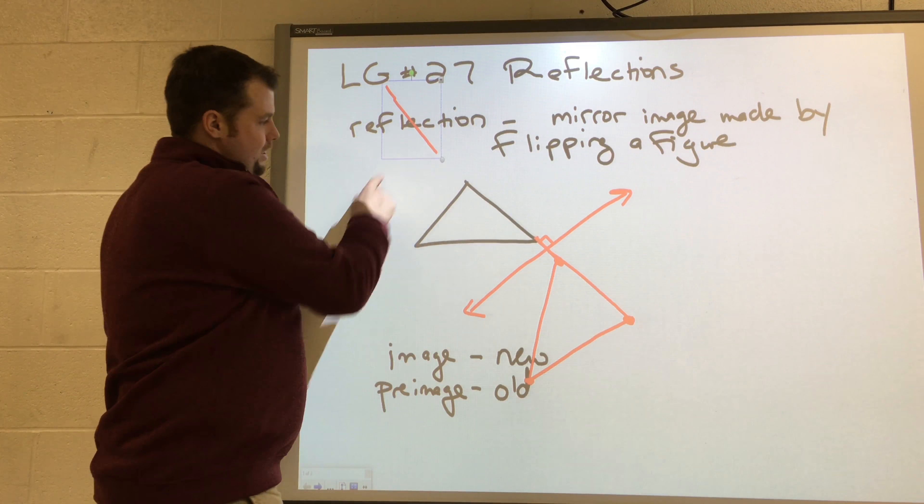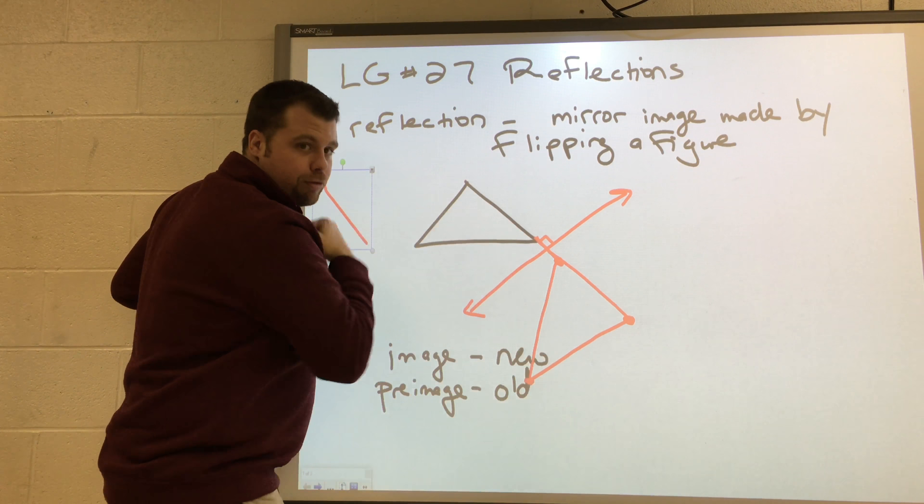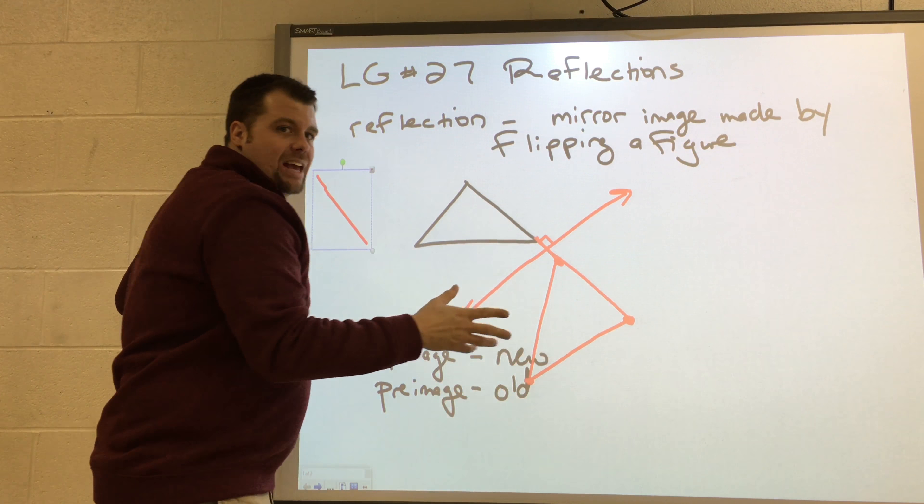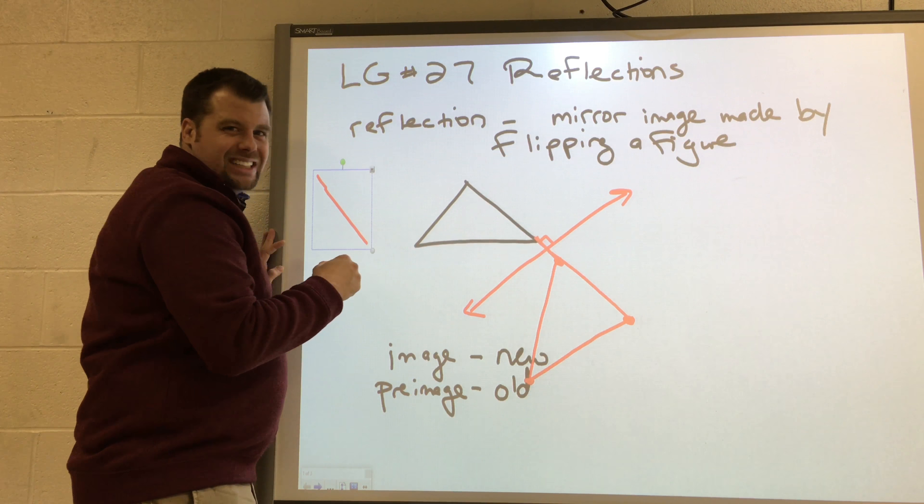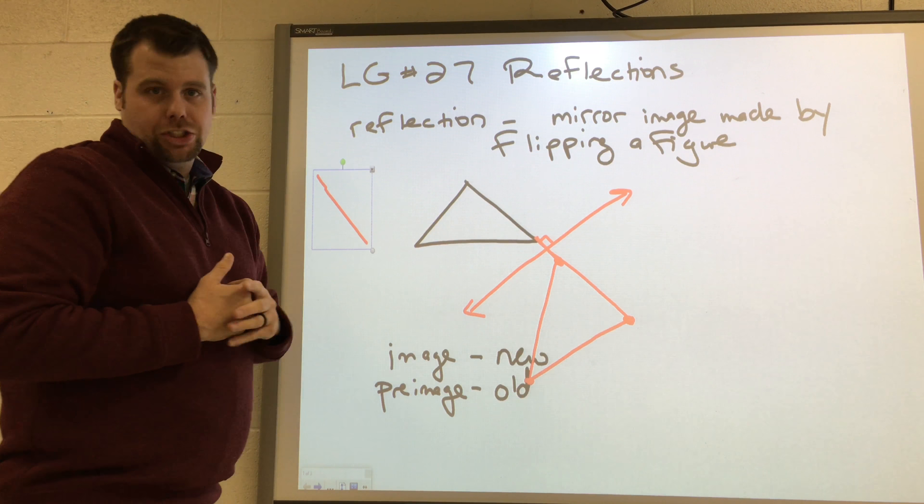But what you can basically see is that I took this triangle and flipped it over this line here. I reflected it. Now, we refer to the new one as our image, and the old one as a pre-image. So we have an image and a pre-image, and this is a reflection.